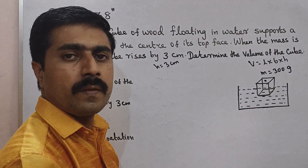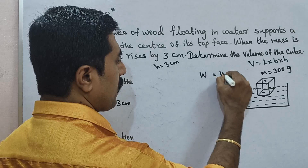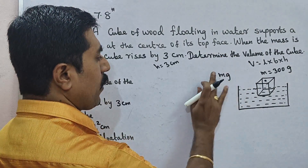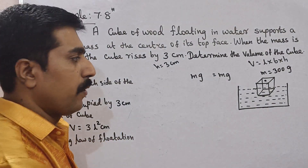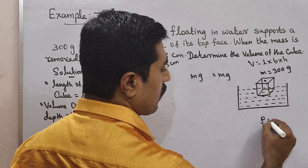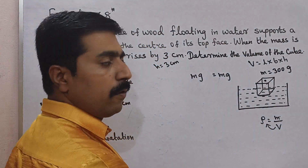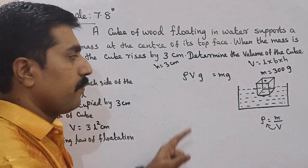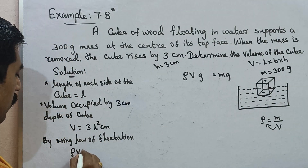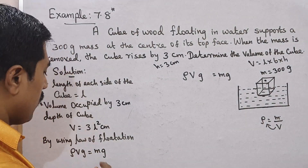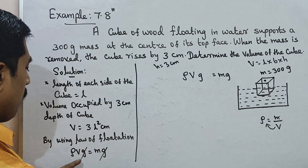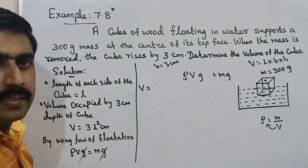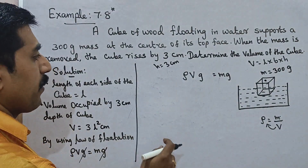The weight of the displaced liquid equals the body weight. Weight equals mass times acceleration due to gravity, which is mg. Since density equals mass divided by volume, mass equals density times volume, so we get ρVg = mg. The g cancels on both sides, giving V = m divided by ρ.